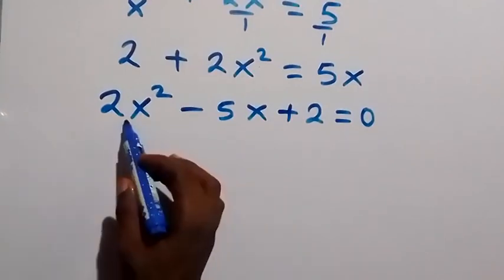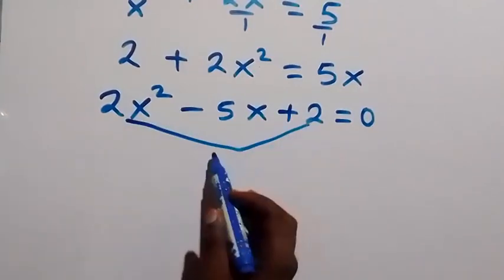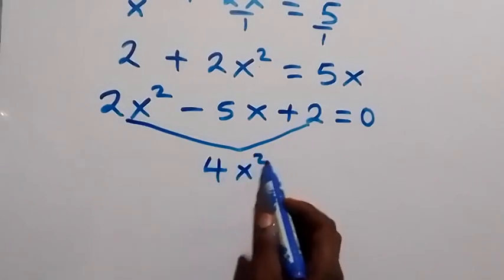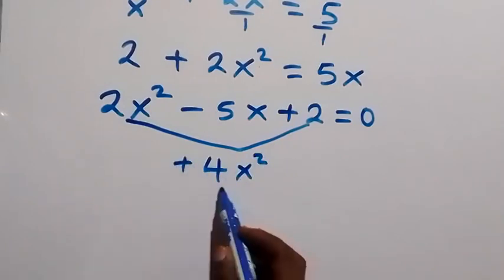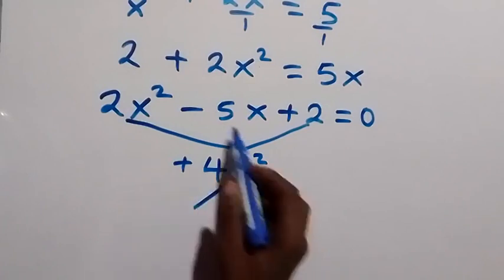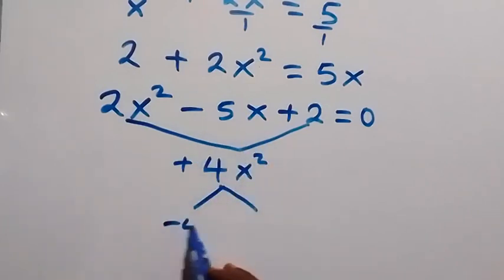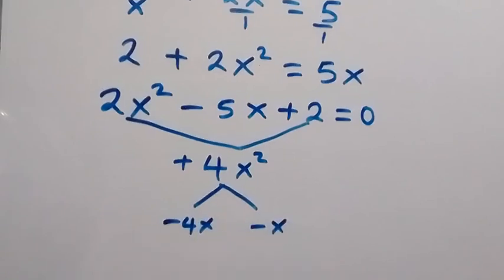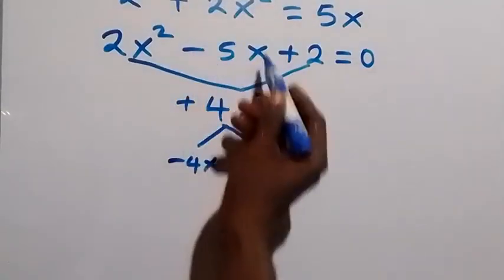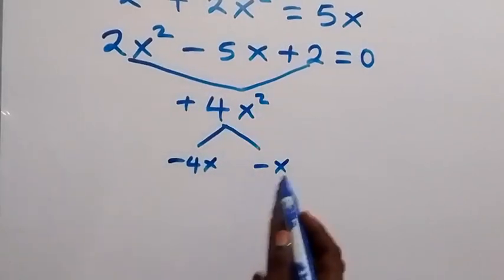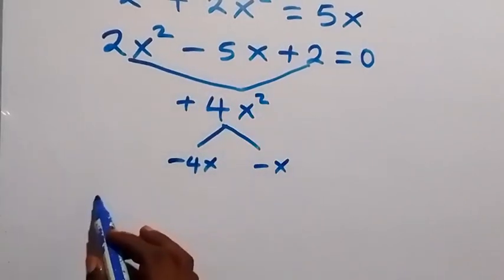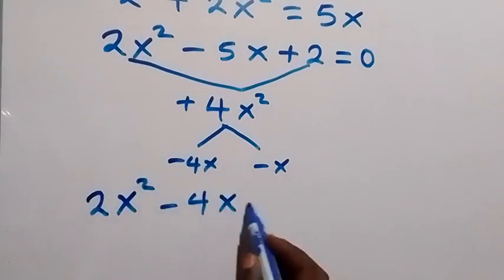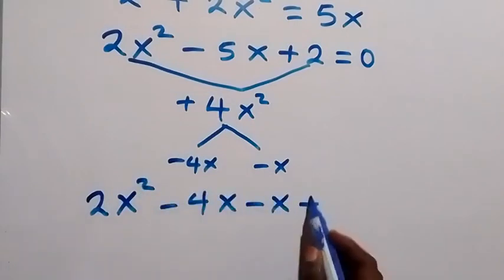We solve this by factorizing. Multiplying the first and last terms gives 4x squared. The factors that sum to minus 5x are minus 4x and minus x. We replace minus 5x with minus 4x minus x, giving us 2x squared minus 4x minus x plus 2 equals 0.